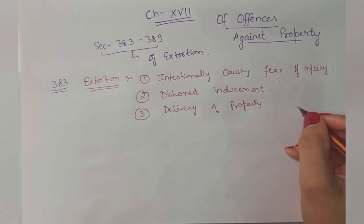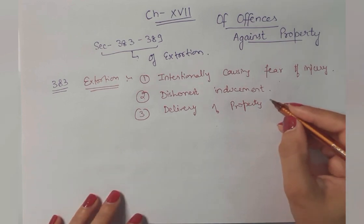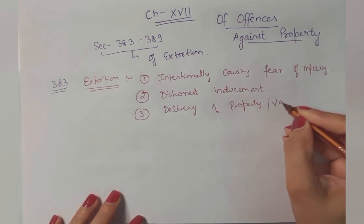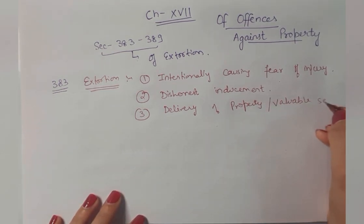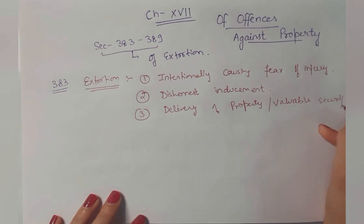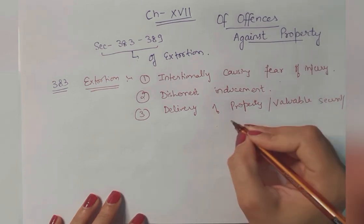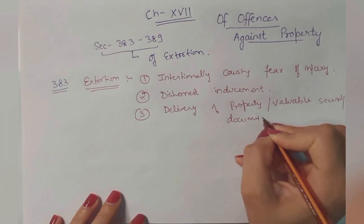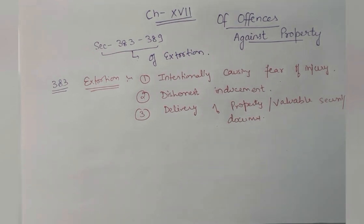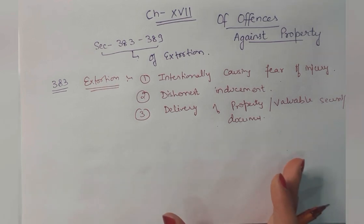That delivery of property can also be a valuable security — like someone's jewelry or something — or any document that is signed or sealed which may convert into valuable security later on.